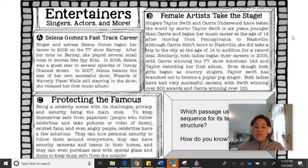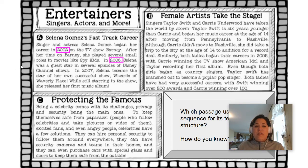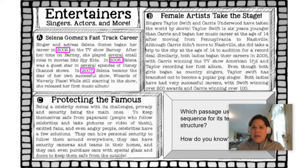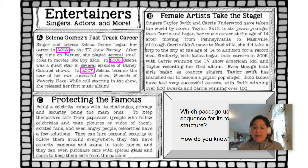Only one of these passages is organized by sequence. If you picked A, Selena Gomez's Fast Track Career, then you are right. This text is clearly organized in 2002, in 2006, and 2007 — going through a progression of events that happened in this person's life. You might say, Mrs. Snyder, I see the year 2005 in passage B. True, but just because there's a year doesn't make it sequence. There are no other years going from one point in time to another like passage A.